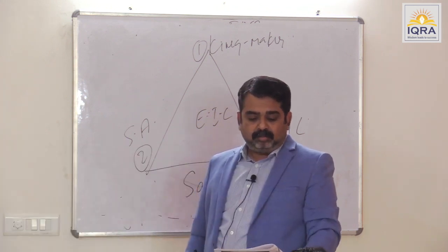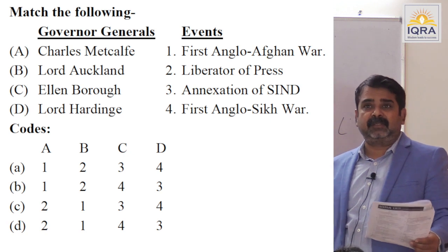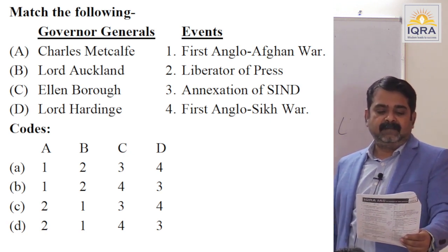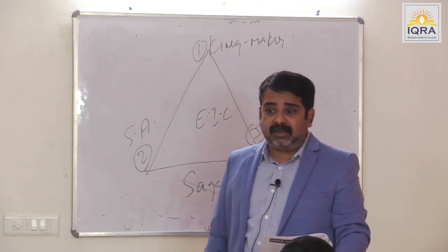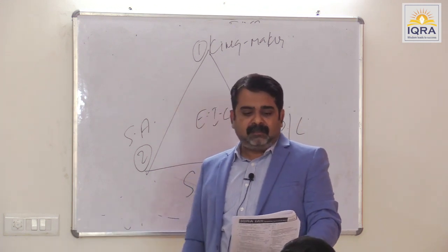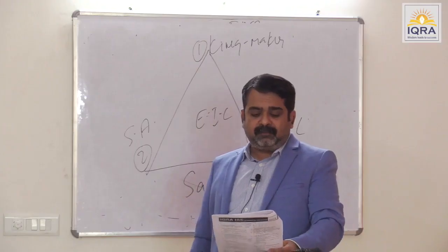Question 24: Governor General's events — important. First Anglo-Afghan War: Lord Auckland. Annexation of Sindh: Ellenborough. The company faced condemnation for annexing Sindh. Match the following: A-2, B-1, C-3, D-4. First Anglo-Sikh War. Answer is C. What was true about the period of William Bentinck — consolidator?